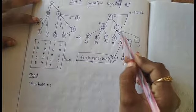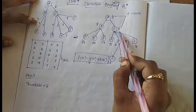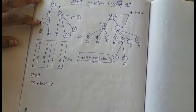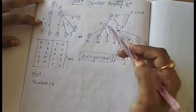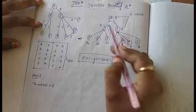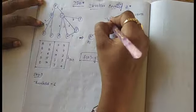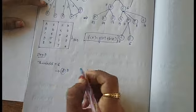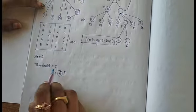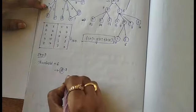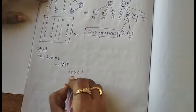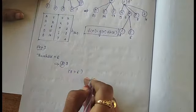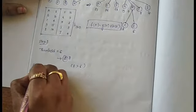If we have a threshold value of 6 in the first step, we will explore the nodes from the root. The starting node is A. We visit node A first. If the F-score is greater than the threshold value, what we do in this case is maintain a list of F values.